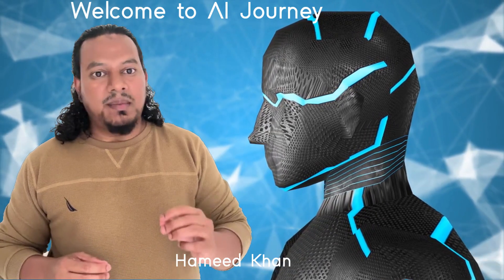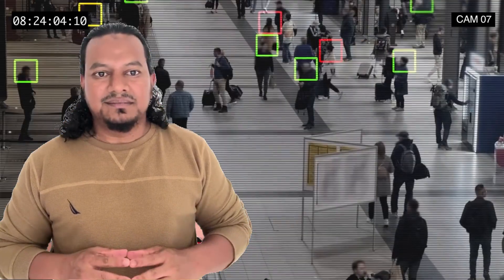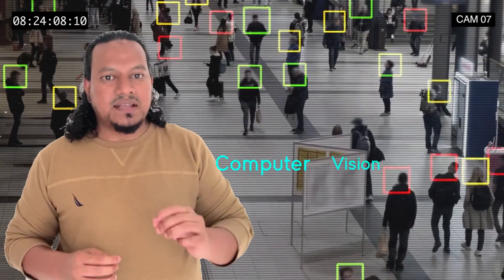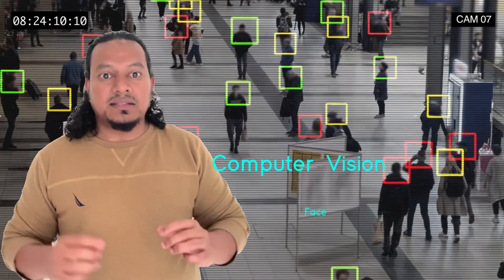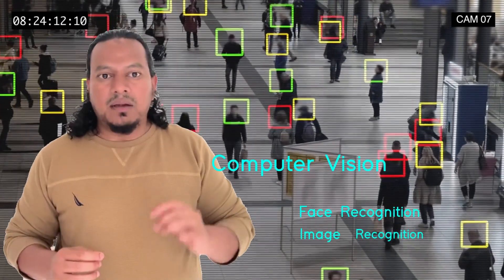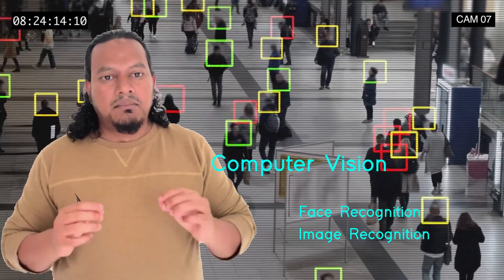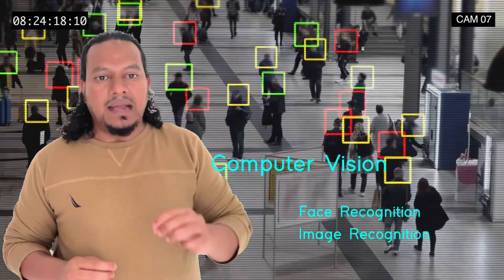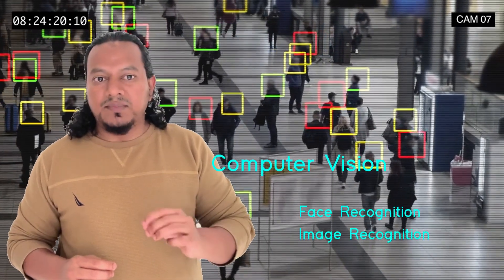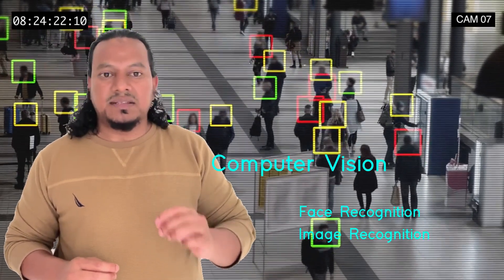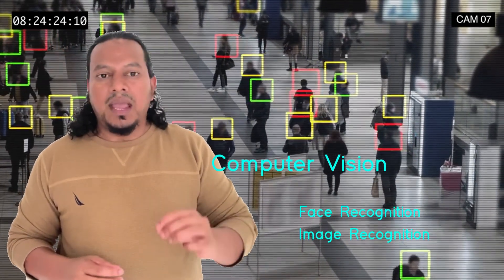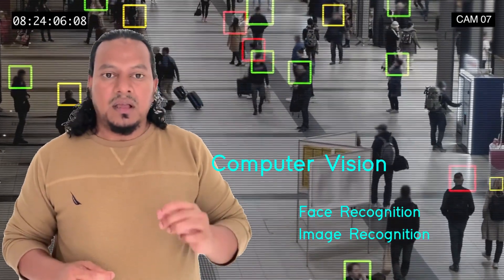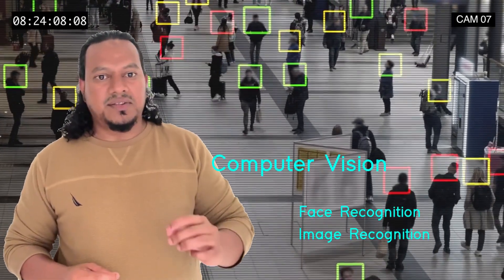Computer vision is one of the subfields of AI which mainly focuses on understanding and analyzing visual information and visual objects. This means computer vision has the capability of identifying people or objects in images as well as in videos. The main subdomains of computer vision are face recognition and image recognition.